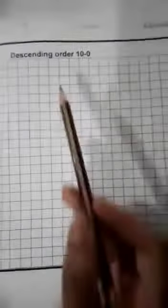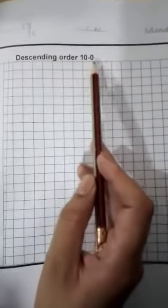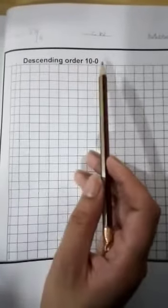Students, after that, we will draw a margin line here like this and read the heading with me. The heading is descending order 10 to 0. Descending order 10 to 0.